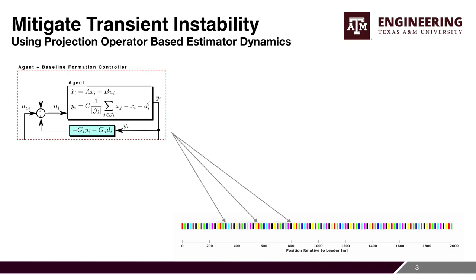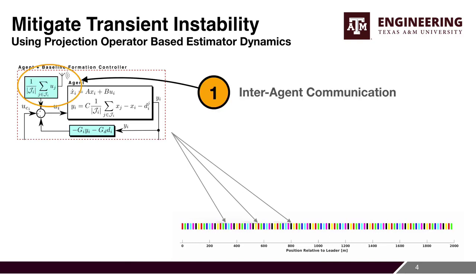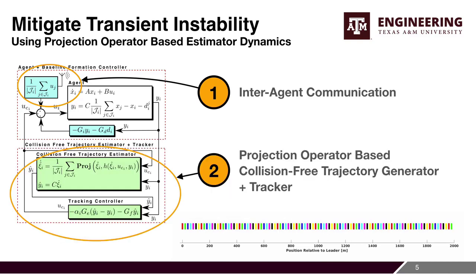This paper introduces the control algorithm and the associated theoretical results to mitigate transient instability while maintaining the overall asymptotic stability. So how did we accomplish this? Notice that each agent consists of a baseline controller that is used to accomplish position maintenance. To this, we first added inter-agent communication. Second, we augmented the baseline controller with a projection operator-based estimator that generates collision-free trajectories. We also added a tracking controller to track the collision-free trajectories generated by the projection-based estimator. This paper shows that the estimator-tracker together with the inter-agent communication effectively mitigates transient instabilities in formations with arbitrary interactions. Next, let's see an illustrative example.